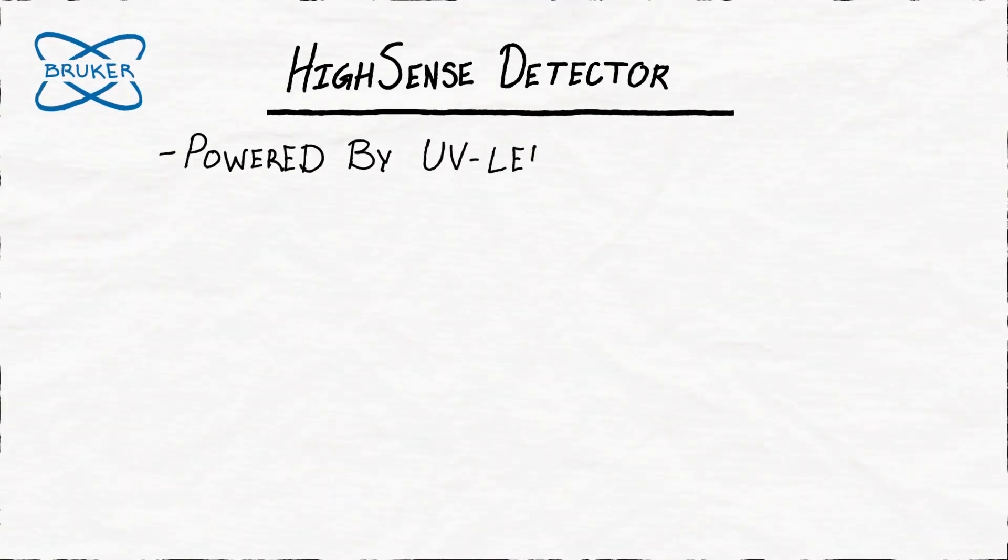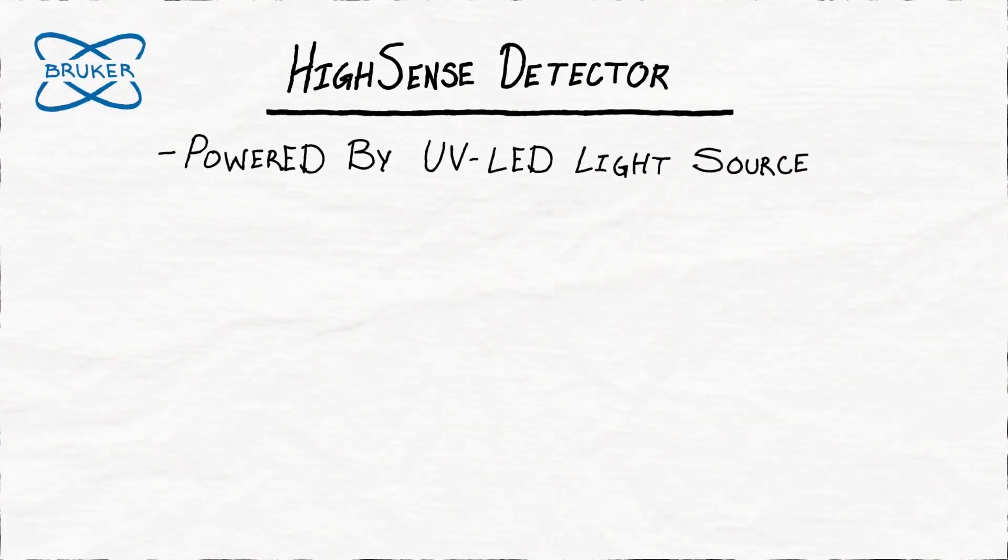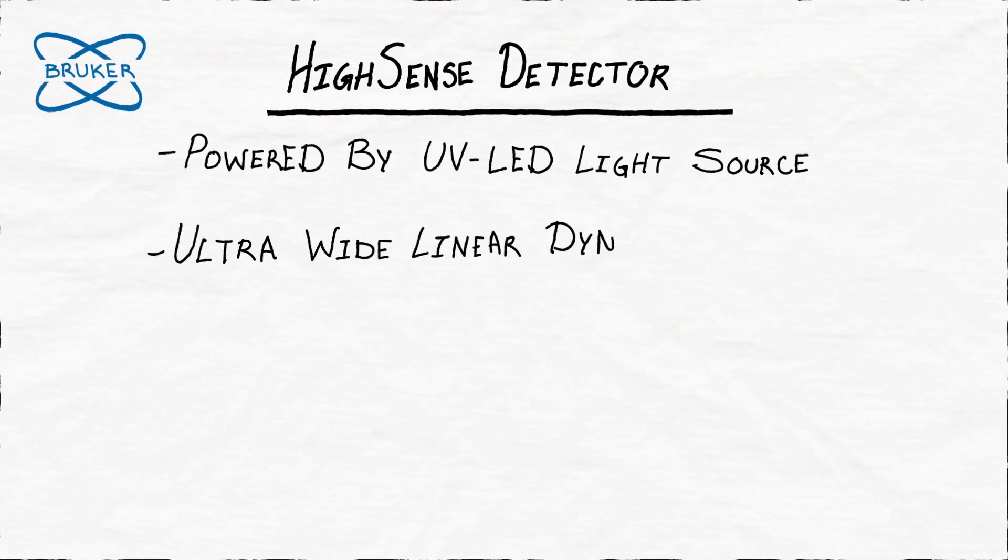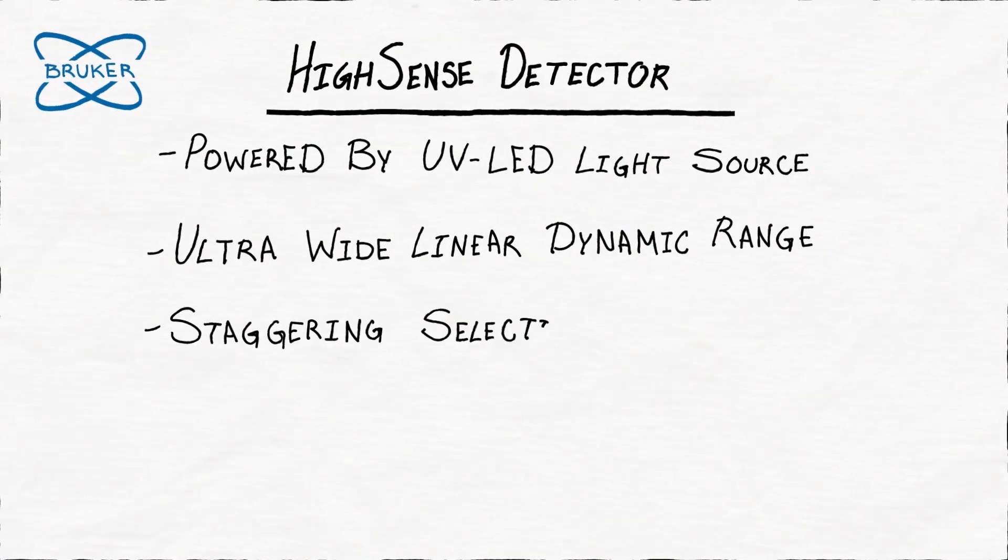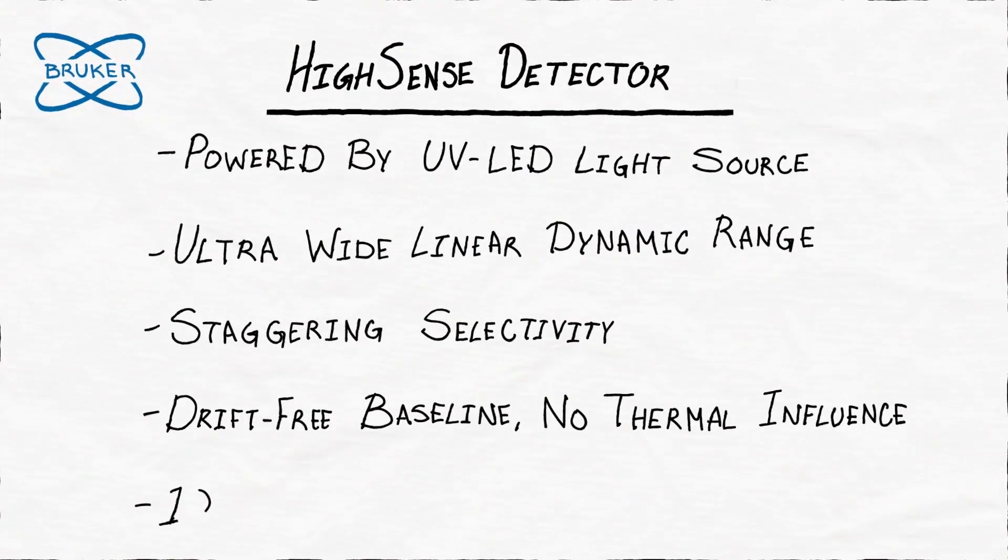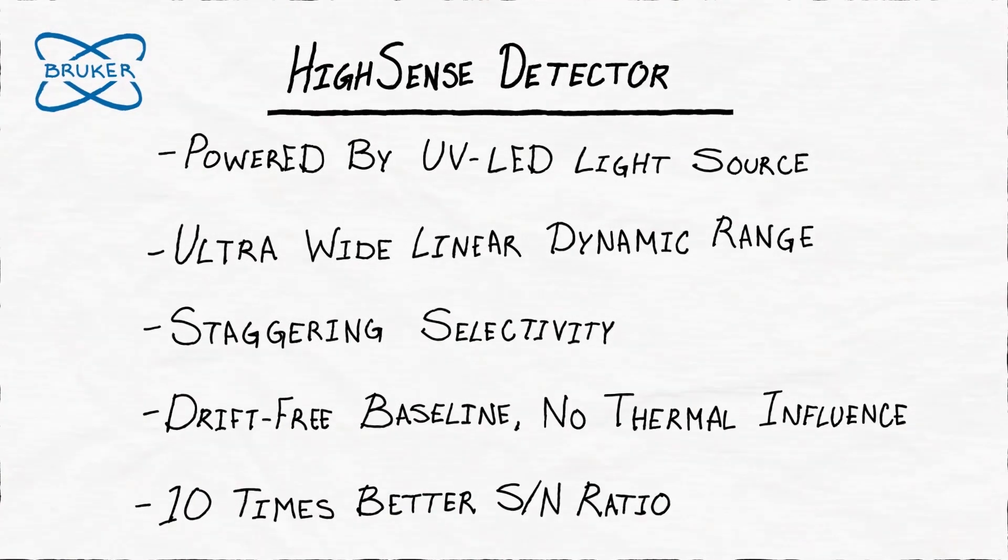Bruker's HiSense detector is powered by a long-life UV LED source and boasts an ultra-wide linear dynamic range, staggering selectivity, a drift-free baseline, and a 10-time better signal-to-noise ratio.